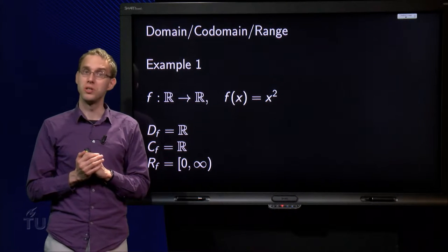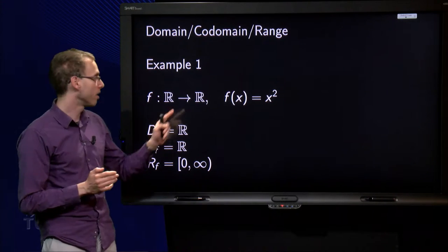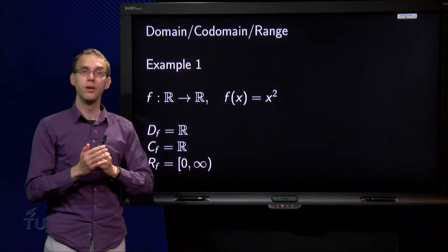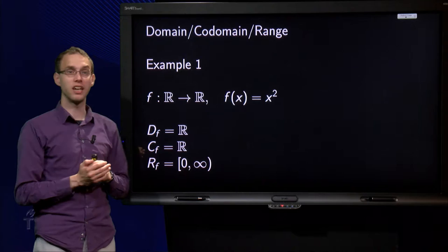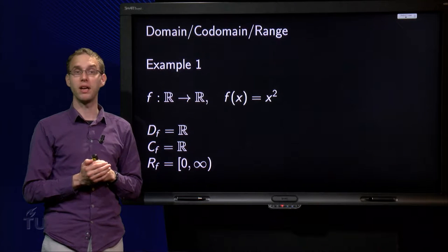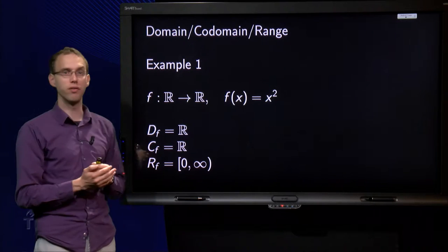We will use two examples. First example, f from R to R, f(x) equals x squared. You can read off the domain and the codomain straight away. Domain is the set of all admissible inputs. You can square any real number, so we can take R over here.